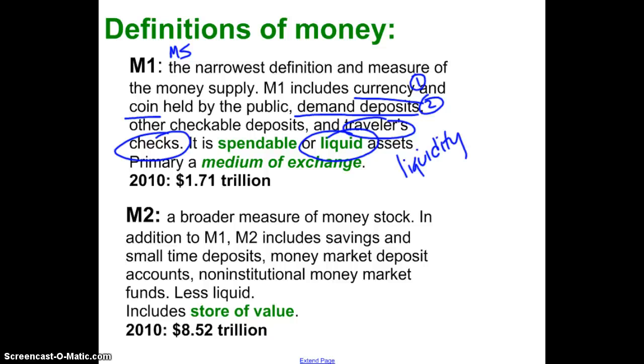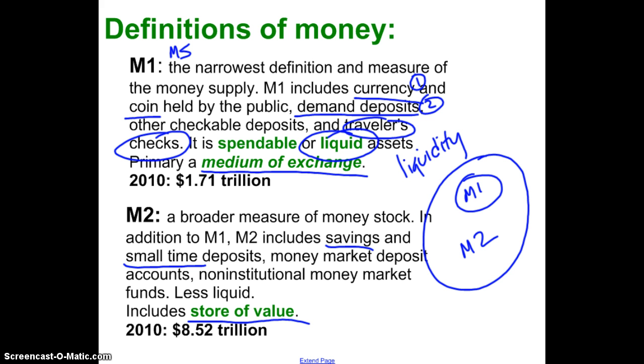M2 is the broader measure of the money supply or money stock. It includes all of M1. So if you envision this is M1, M2 encompasses M1, but adds a few more things. It also includes savings accounts and small time deposits. It includes money market deposit accounts and other money market funds. It is less liquid. So money that's in your savings account, you theoretically cannot spend it right now. Now, I realize that debit cards have sort of blurred the line between these two. But for the purpose of our definitions, if money is in a savings account, it's not in spendable form. If it's in a checking account, it is in spendable form. M1 is money that is primarily being used as a medium of exchange, where M2 includes money that is primarily being held in the store of value.